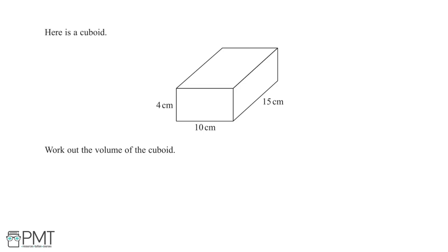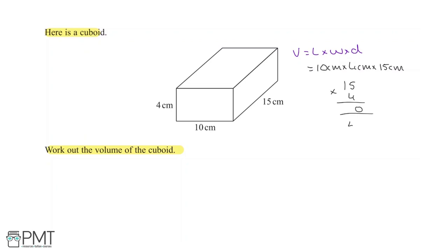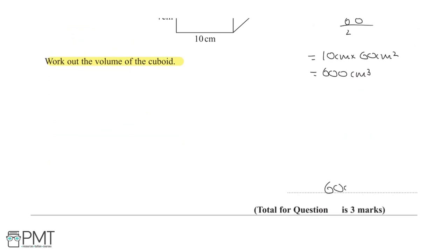We are given a cuboid and asked to find its volume for three marks. The formula is volume = length × width × depth. The dimensions are 10 cm, 4 cm, and 15 cm. First, 4 × 15 = 60 cm². Then 60 × 10 = 600. The units are centimetres cubed, so the correct answer is 600 cm³.